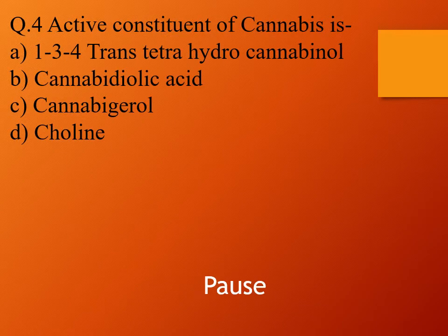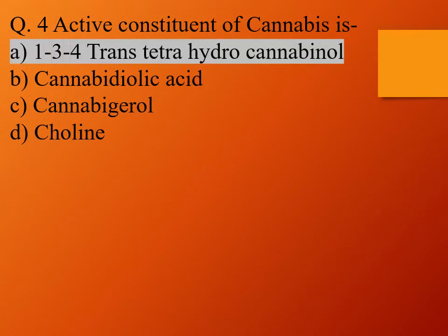Question 4. Active constituent of cannabis is: option A, 1,3,4-trans-tetrahydrocannabinol; option B, cannabidoic acid; option C, cannabigerol; and option D, choline. The right answer is option A, 1,3,4-trans-tetrahydrocannabinol. So the active constituent of cannabis is 1,3,4-trans-tetrahydrocannabinol.